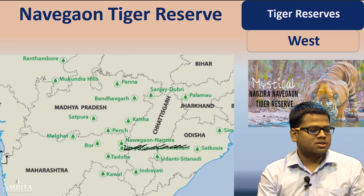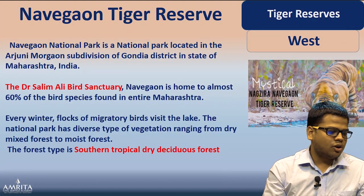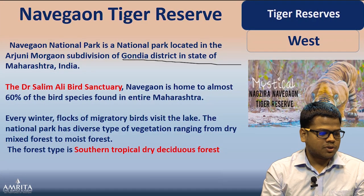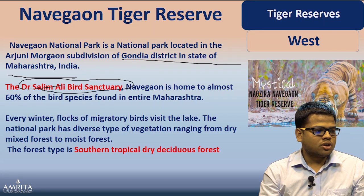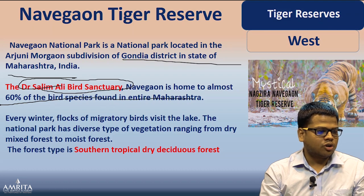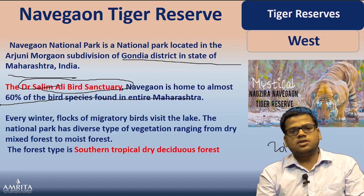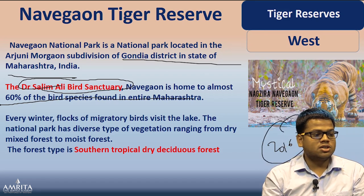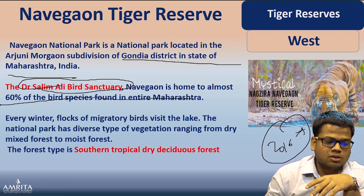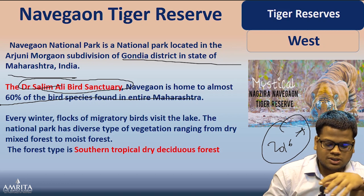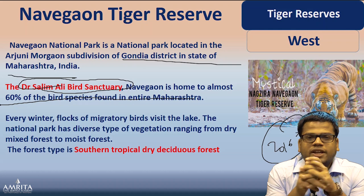Navegaon-Nagzira National Park is located in the state of Maharashtra. Importantly, it contains the Dr. Salim Ali Bird Sanctuary inside it and is home to 60 percent of bird species found in entire Maharashtra. In 2016, a question was asked about which state declared a butterfly as its state animal or bird — Maharashtra-related questions can come from this context. The dominant forest type here is southern tropical dry deciduous forest.